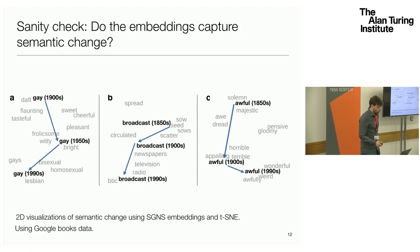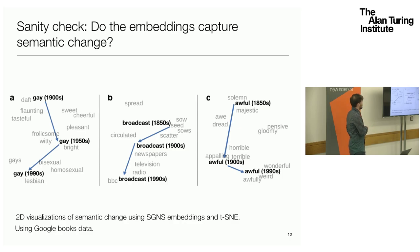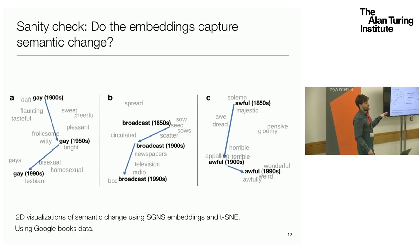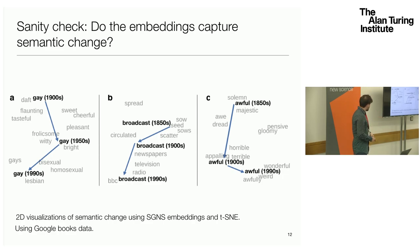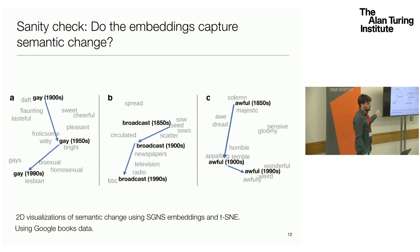Just as a quick sanity check that measuring semantic change using word embeddings is reasonable — I've shown here a visualization of the change in meaning we see for three words using the Word2Vec approach, with embeddings learned from the Google Books dataset. Google Books has about 6% of all English books ever published, from around 1600 to the 2000s. We're looking from the 1900s up to the 2000s, and also have some data back to 1850.